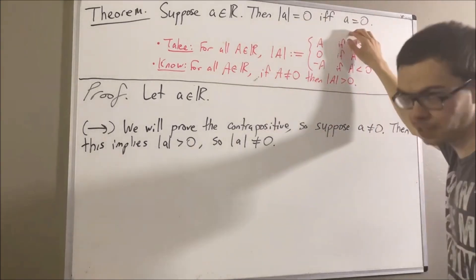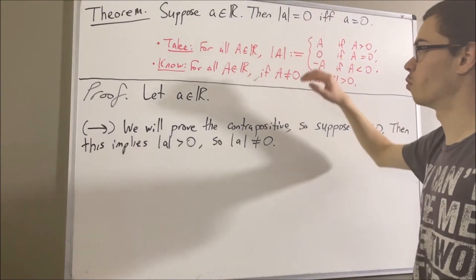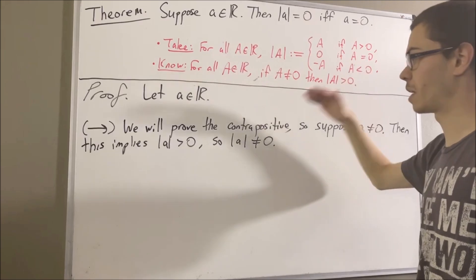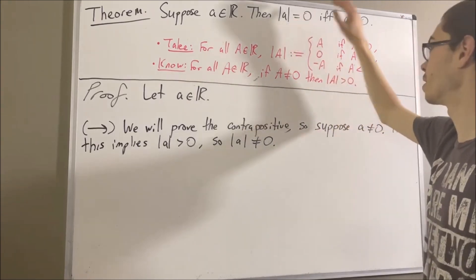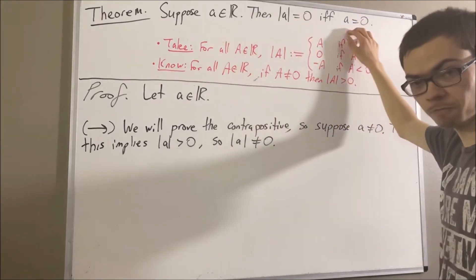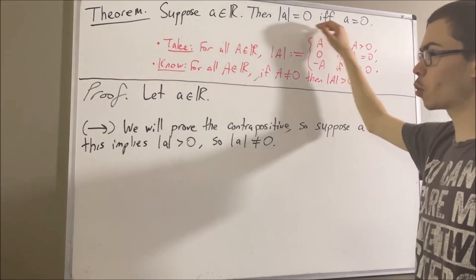Therefore, if a is not equal to zero, then the absolute value of a is not equal to zero. So we have proven by the contrapositive that if the absolute value of a equals zero, then a equals zero. That completes the forward direction.